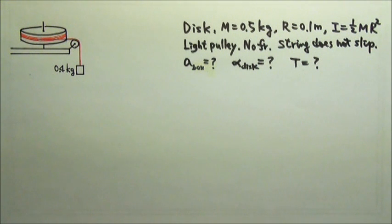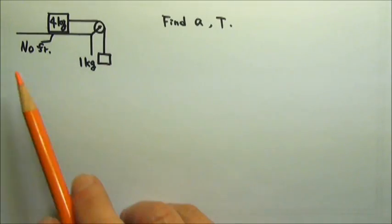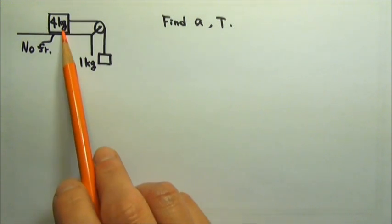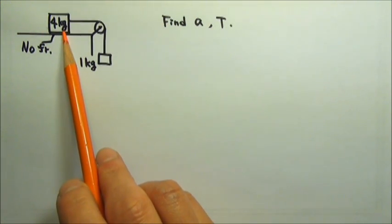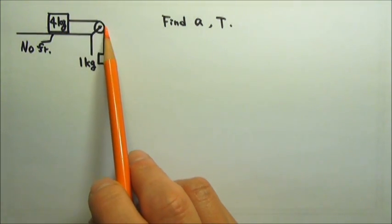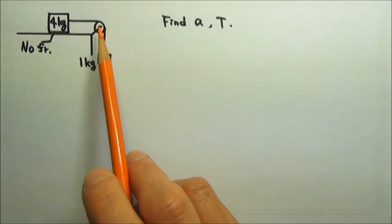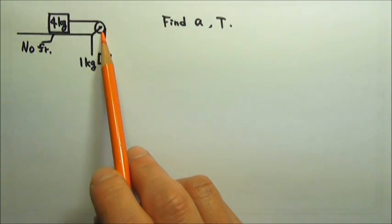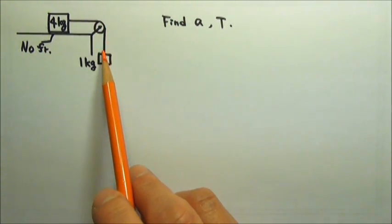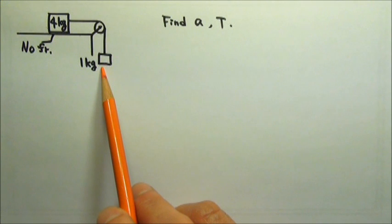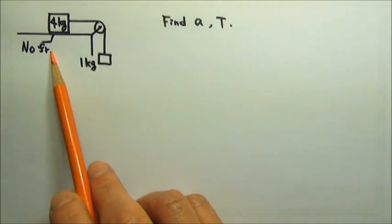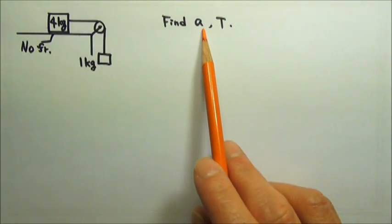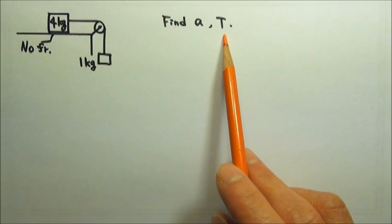Before we start working on this problem, let's review an old one. We used to do problems like this: a 4 kg box on a table is attached to a string that goes over a massless pulley and is tied to a hanging 1 kg box. Ignore friction. Find the acceleration of the boxes and the tension in the string.